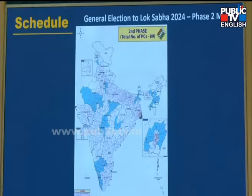Second phase mein ikkis states jayengi poll mein. The second phase notification will start on 28th of March and date of poll will be 26th of April. Similarly, in case of J&K, because of some holiday, the date of nomination scrutiny would be different, but the date of gazette notification and date of poll would be common. Phase 1 mein ikkis rajay polling mein jayengi aur phase 2 mein us mein se aur rajay jur jayengi.